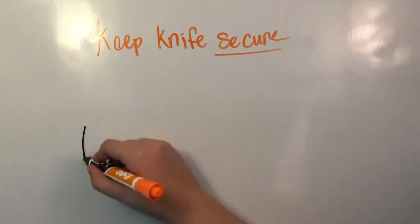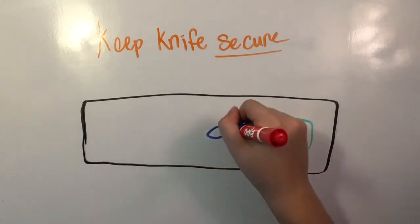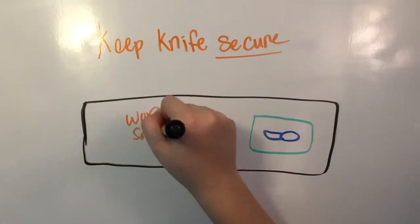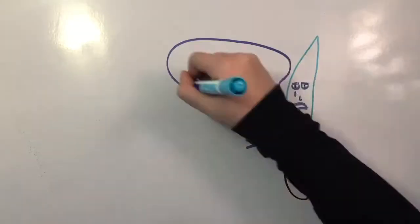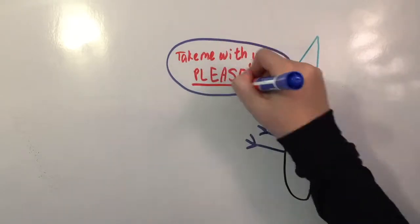Also, make sure to keep the knife secure on your workstation. Leave it entirely on the table or entirely on the cutting board. Lastly, if the knife doesn't need to go with you when you're moving around the kitchen, just leave it at your station.